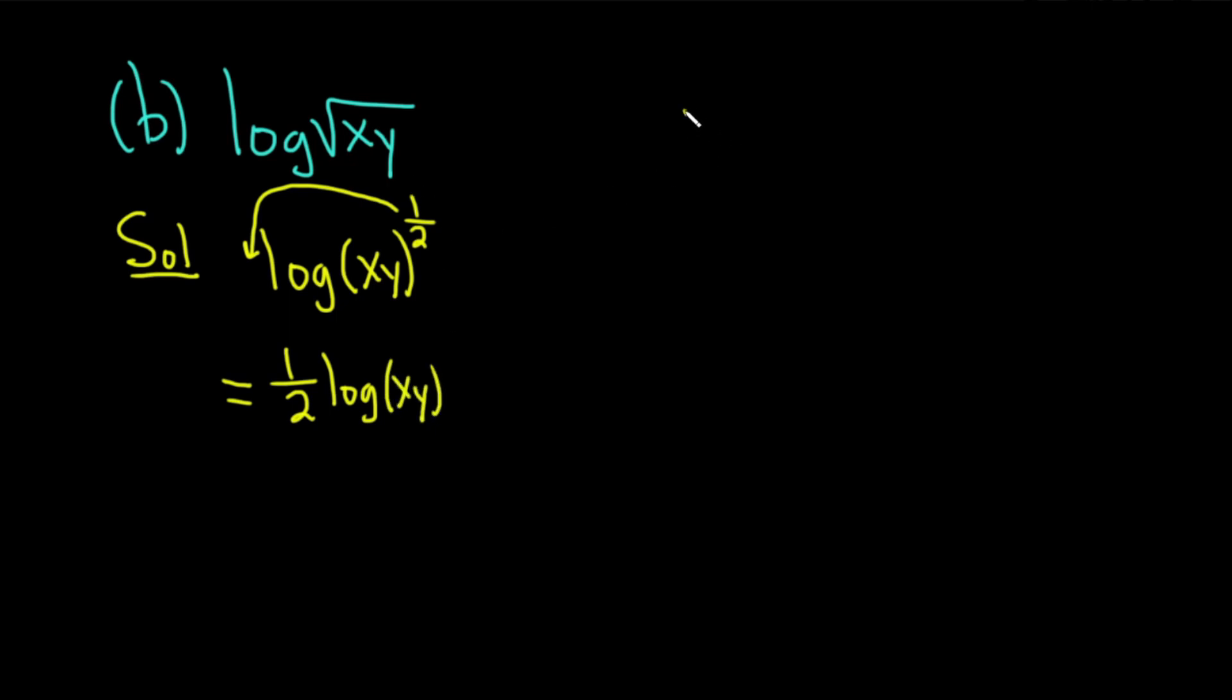The rule we used here is called the power rule for logarithms. It's one of the laws of logarithms. And it basically says if you have the log base b of x to a power, you can put the power in the front. So that's equal to p times the log base b of x.